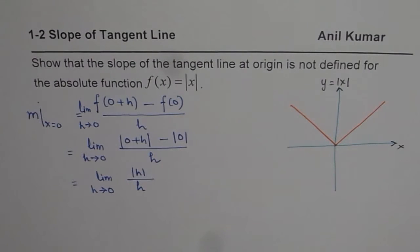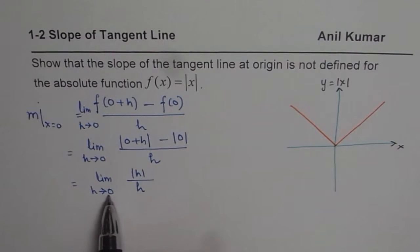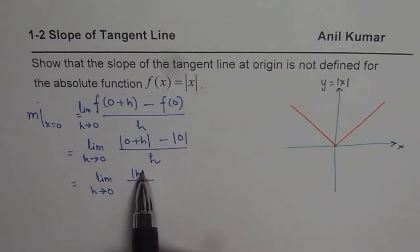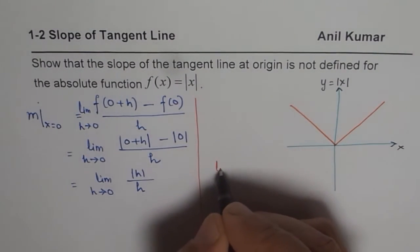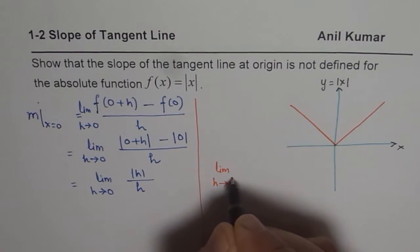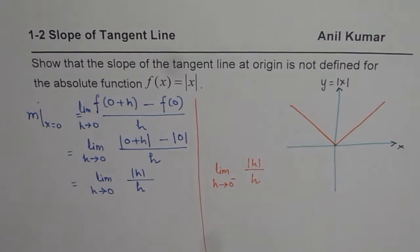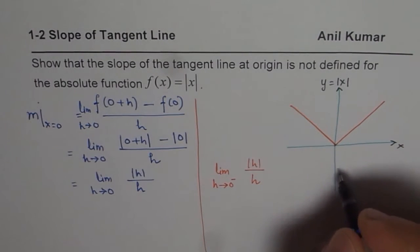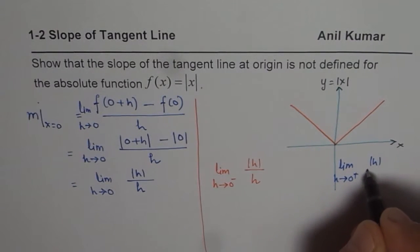Now what happens when h is negative? When approaching 0, we need to find the limiting value of |h| / h. To find this limiting value, we need to find the limit as h approaches 0 from the left side — that means from the negative side — of |h| / h. We also need to find the limit as h approaches 0 from the positive side of |h| / h.